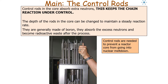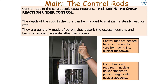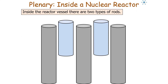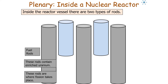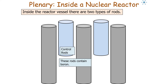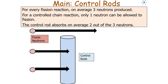Control rods are needed to prevent a reactor core from going into nuclear meltdown and to prevent large-scale nuclear accidents. In a reactor vessel there are two types of rod: fuel rods, which contain enriched uranium in the form of uranium oxide where the fission process takes place, and control rods made from boron where fissile neutrons are absorbed. For every fission reaction, on average three neutrons are produced. For a controlled chain reaction, only one neutron can be allowed to cause further fission, so the control rod on average absorbs two out of every three neutrons.